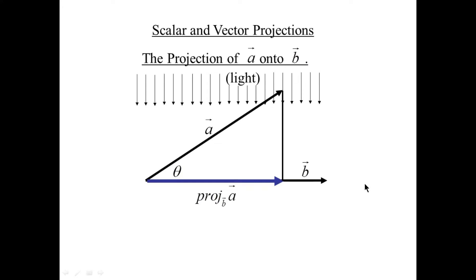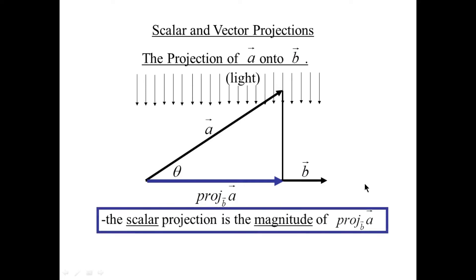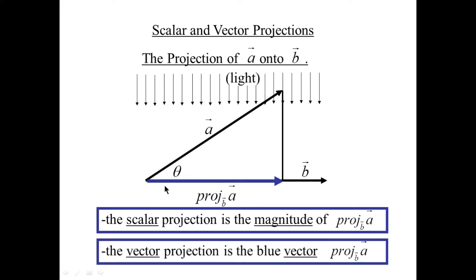Scalar projections — a new concept. The scalar projection is the magnitude. This is new notation: different textbooks use different notations. This means the projection of vector A onto subscript vector B — projection of A onto B. So the light source is shining directly onto subscript vector B. The vector projection is the actual blue vector, while the scalar projection is the length of that blue vector.